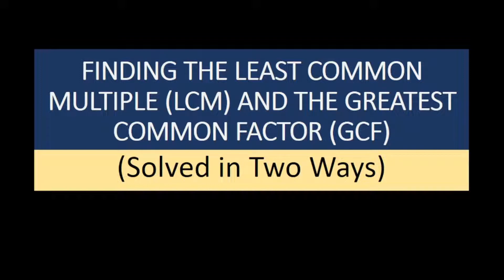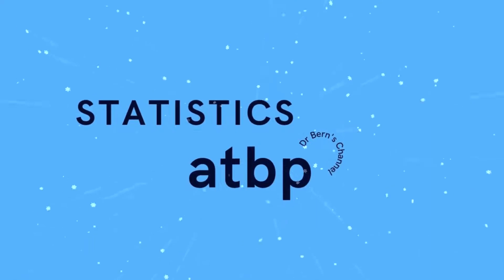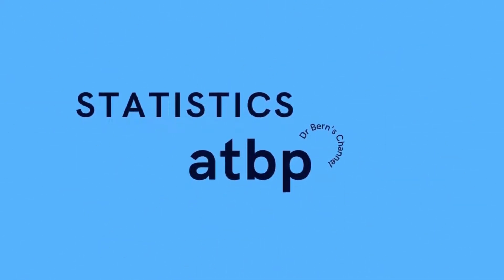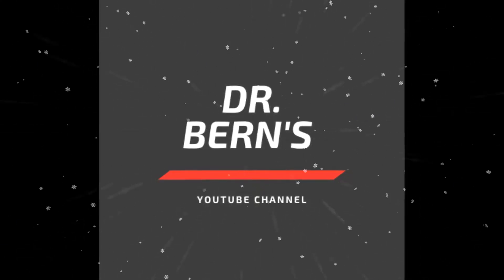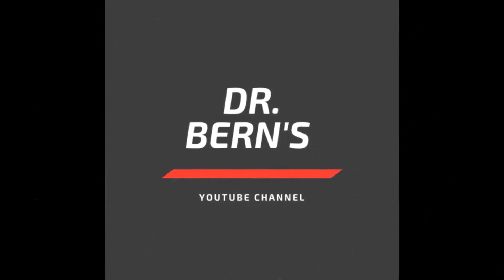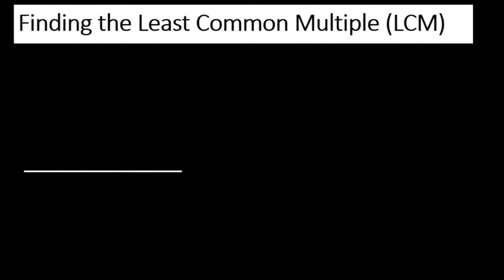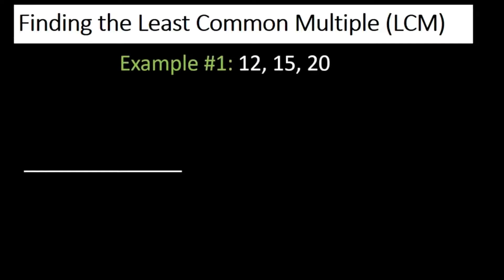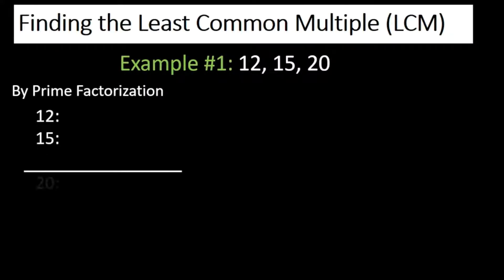Let's have the first example on finding the least common multiple of given numbers. Let's have 12, 15, and 20. The first method I'll be showing you is by using prime factorization. We're going to list down the prime factors of 12, 15, and 20.